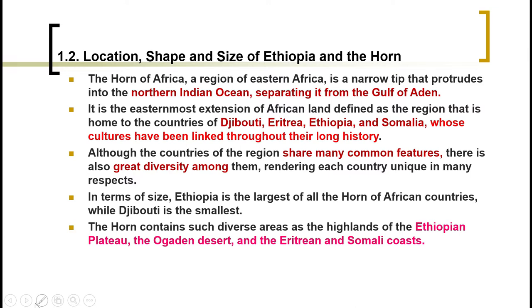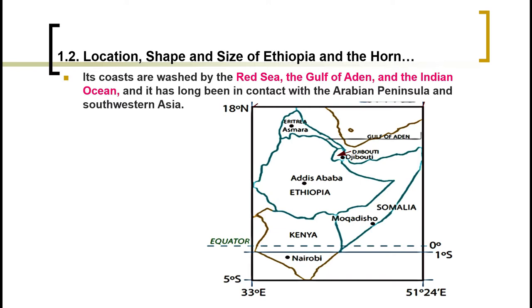Among these countries, Ethiopia is the largest and Djibouti is the smallest. These countries share different desert areas such as the Ogaden, and coastal areas such as the Eritrean and Somali coasts. The Horn of Africa stretches from the southern tip of Somalia at around 1 degree south up to 18 degrees north at the tip of Eritrea, and from 33 degrees east around Berbera up to 51 degrees 24 minutes east.